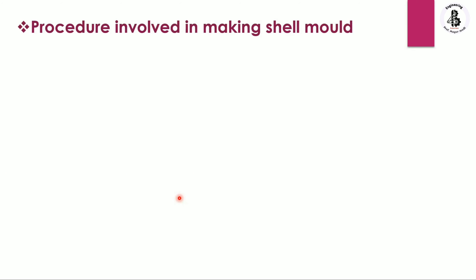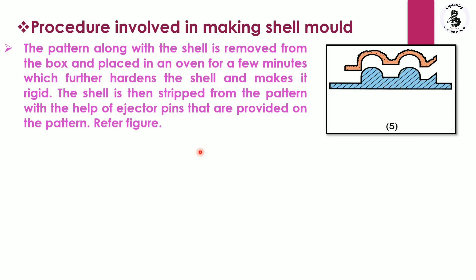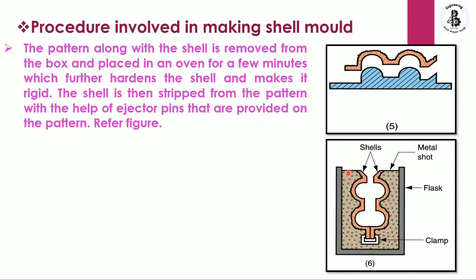The shell is then removed from the pattern with the help of ejector pins. The pattern along with the shell is placed in an oven for a few minutes, which further hardens the shell and makes it rigid, increasing its strength properties. The shell is then stripped from the pattern with the help of the ejector pins provided on the pattern.